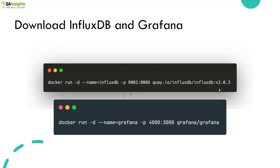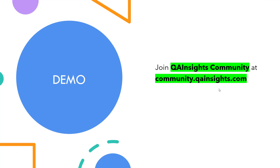Here are the commands you will need. First, we are going to spin up the InfluxDB container, exposing it on port 9002 locally — by default InfluxDB uses port 8086. We are leveraging version 2.0.3. Similarly, Grafana will be exposed at port 4000 locally, though it uses port 3000 internally. The container names will be 'influxdb' for InfluxDB and 'grafana' for Grafana. Now let us dive into the demo.